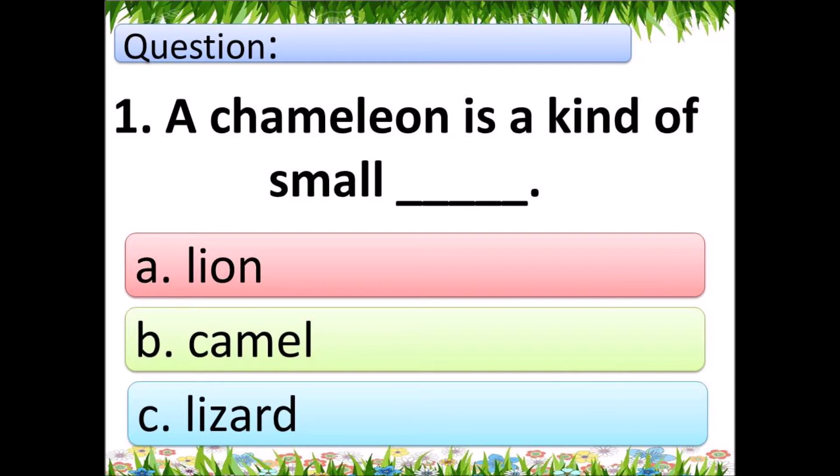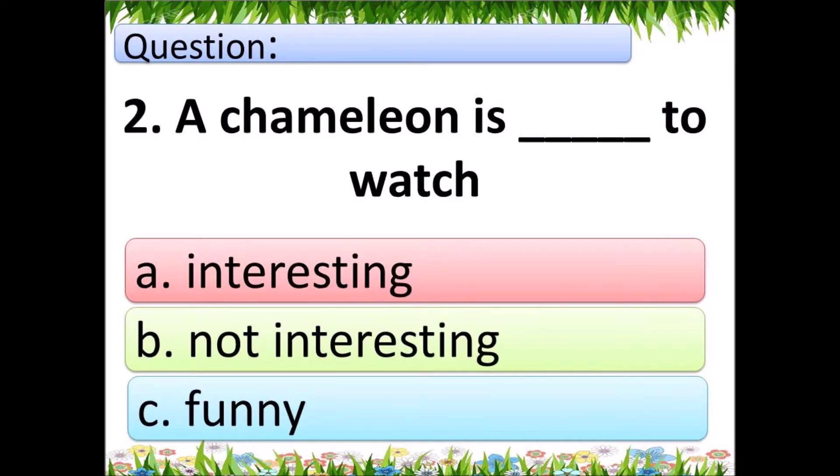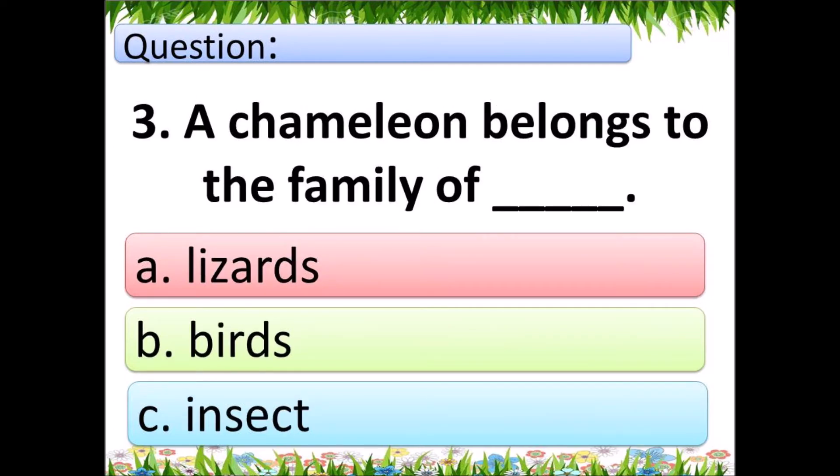Question 1: A chameleon is a kind of small what? A: lion, B: camel, C: lizard.